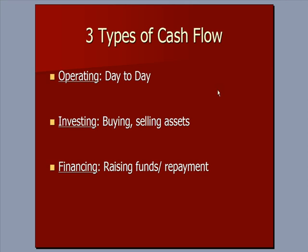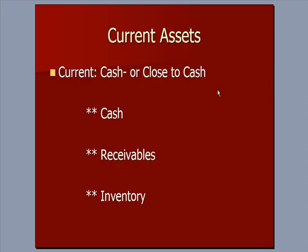I'm going to flip back to PowerPoint because I want to revisit a comment I made briefly in the cash flow one discussion — the difference between current and non-current assets. Current assets are considered cash or something you're going to exchange into cash within the next year — I call it cash or close to cash. Let's stick with the calendar year: in addition to cash, two big things you hope to turn into cash within a year.